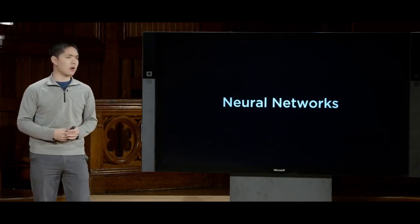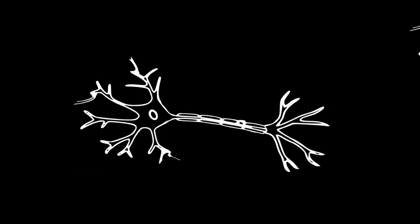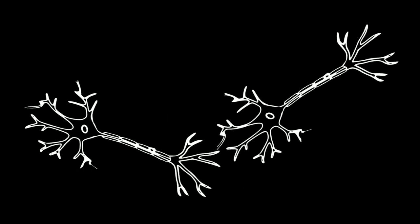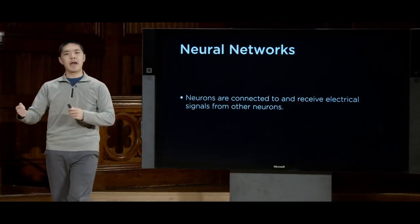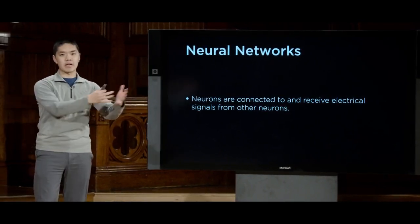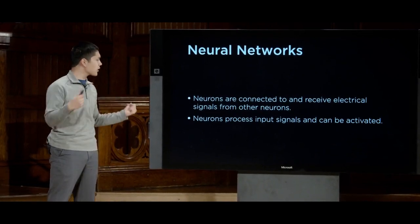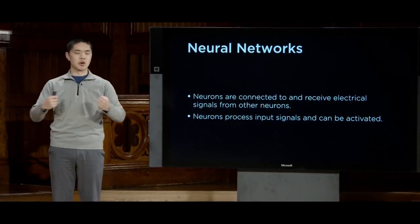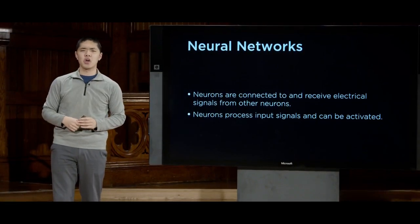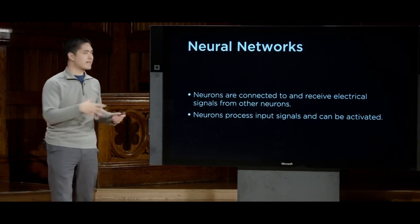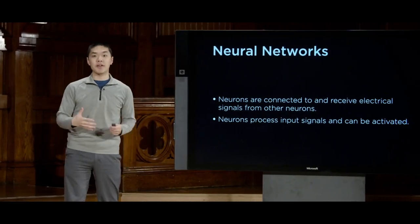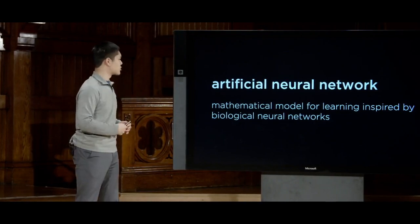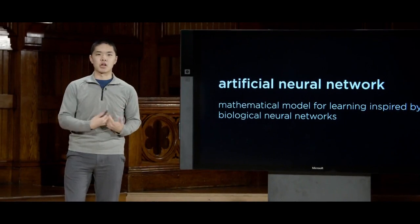So how is the brain structured? Very simply put, the brain consists of a whole bunch of neurons, and those neurons are connected to and communicate with one another. Scientists observed that neurons receive electrical signals from each other, can propagate electrical signals, and become activated at a certain point. This led to the idea of designing an artificial neural network, or ANN, a mathematical model for learning inspired by biological neural networks.